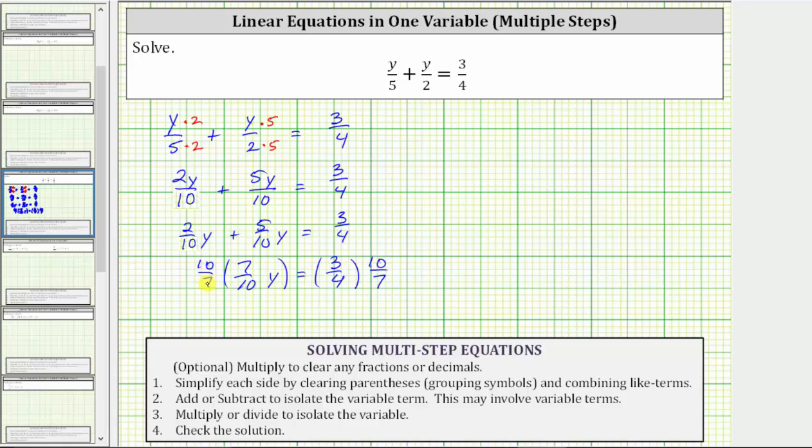On the left side, 10 sevenths times seven-tenths is equal to 1, because they are reciprocals. One times y is y, or if we need to, we can simplify. There's one 10 in 10 here and here, and there's one 7 in 7 here and here, again giving a product of 1.